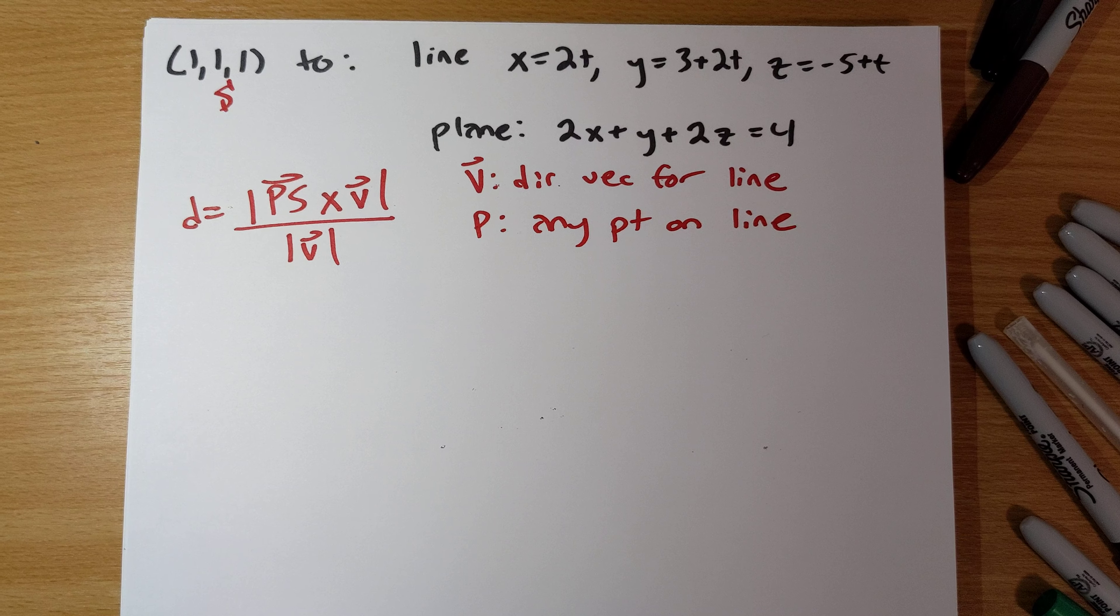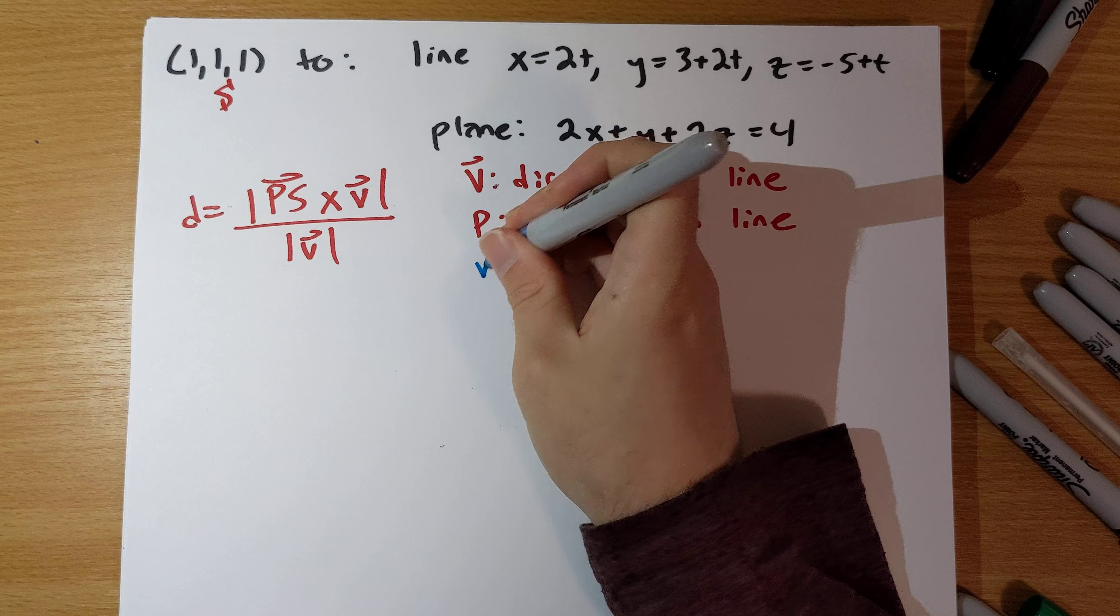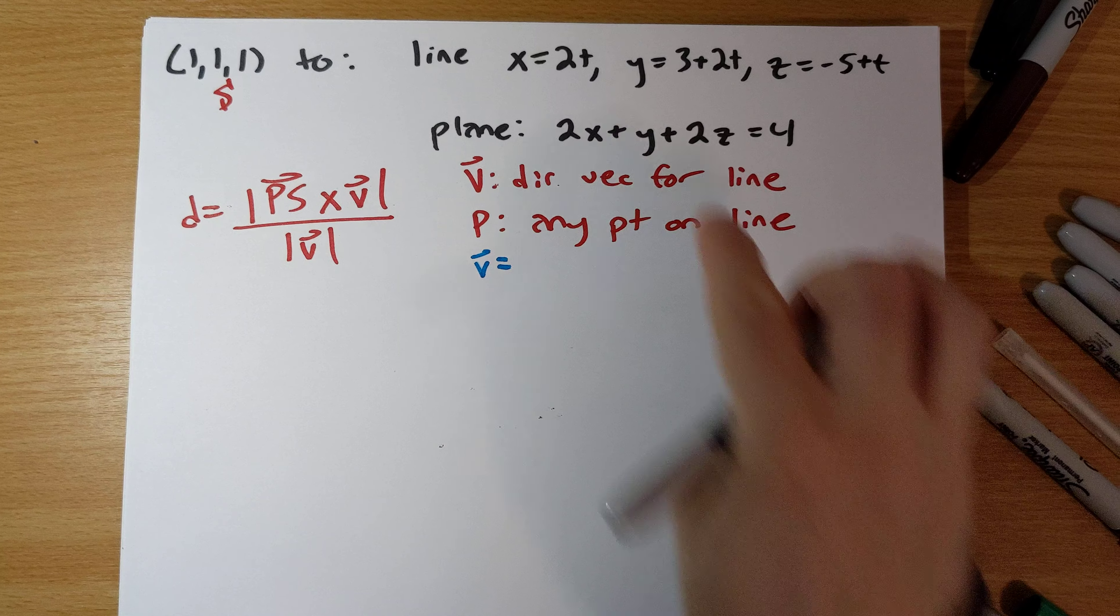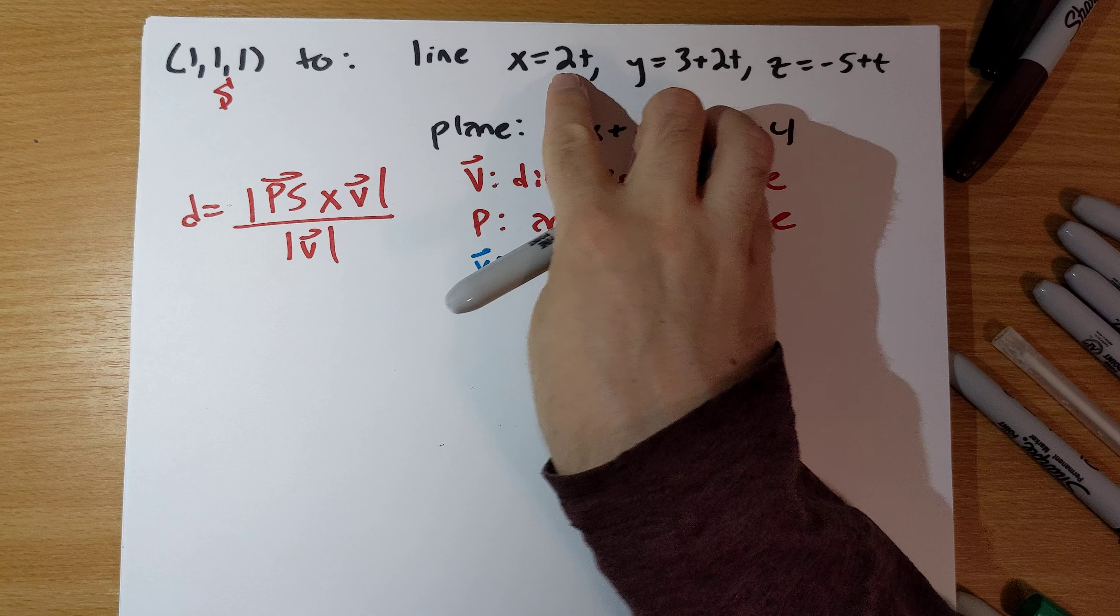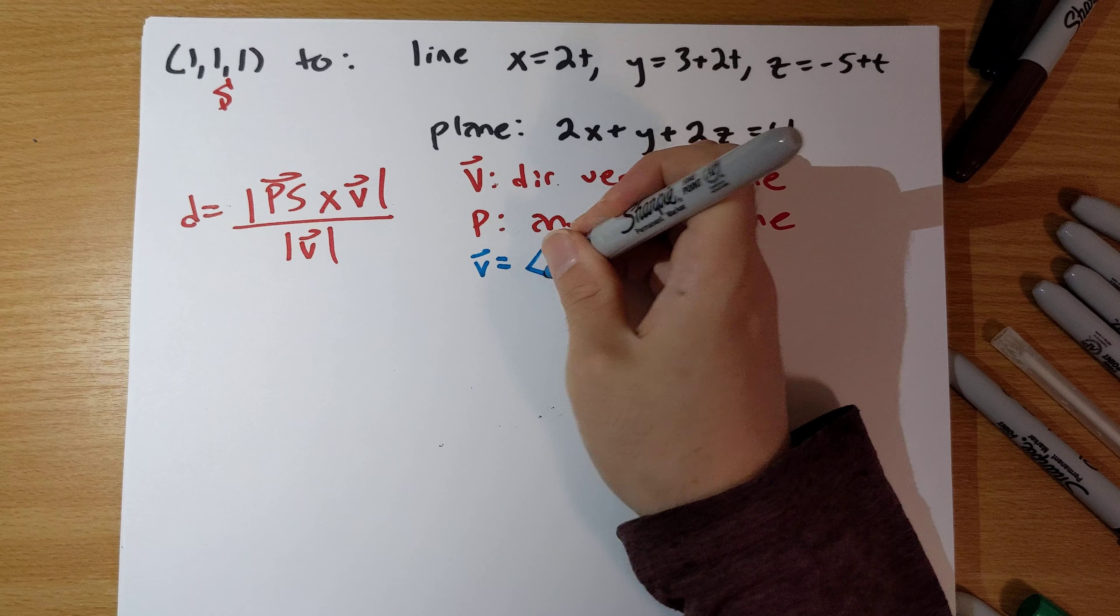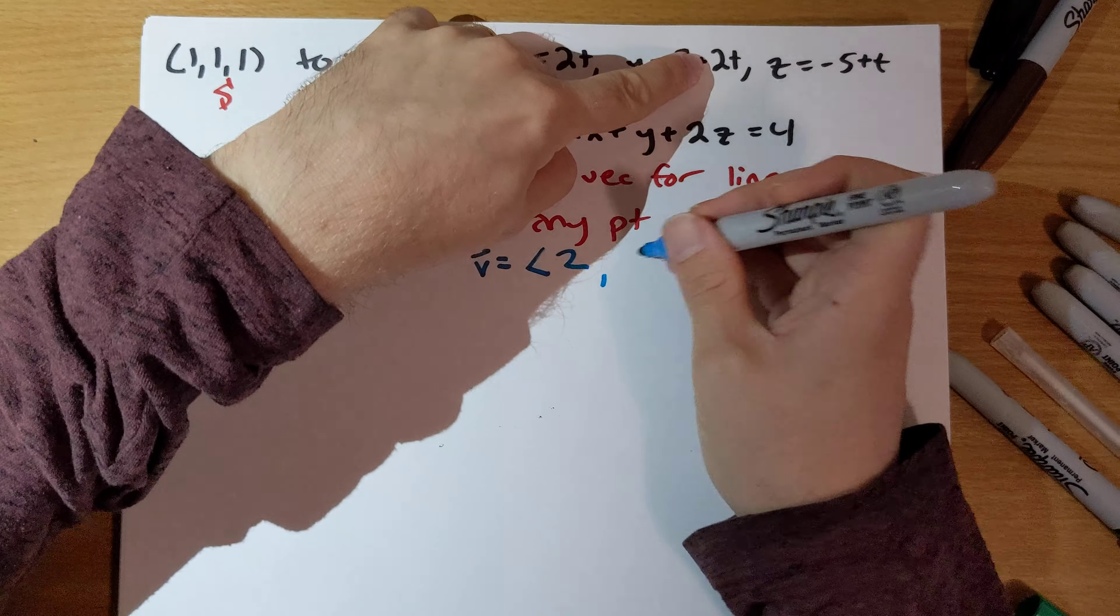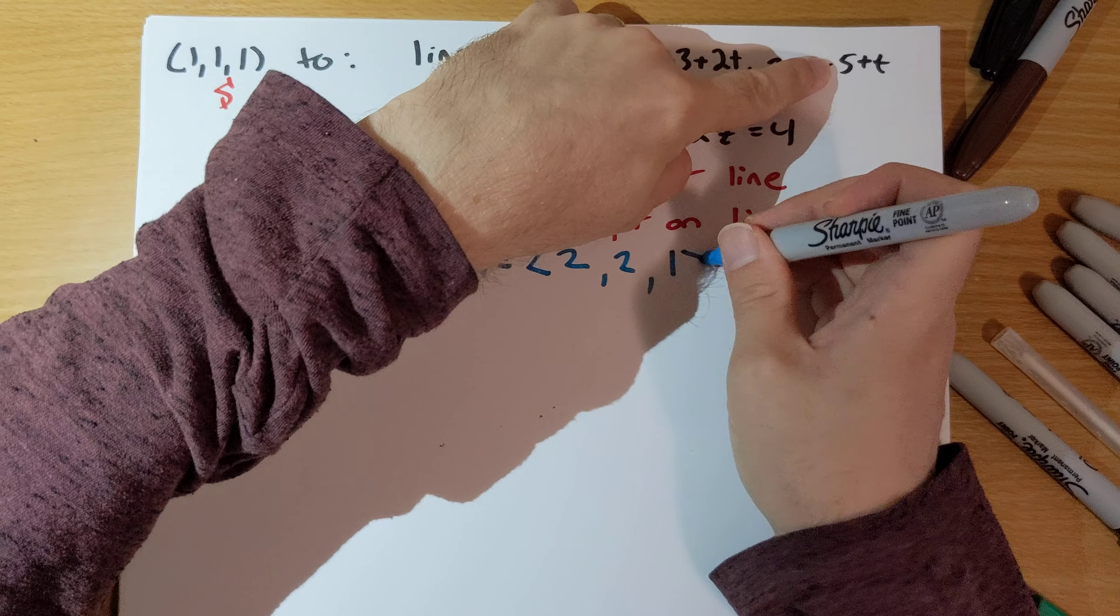So, to find a direction vector, we just need the coefficients of t in the x, y, z equation, so 2, 2, and 1.